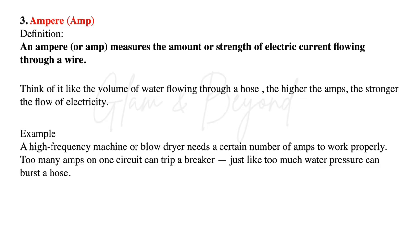Number three, ampere, also known as an amp. An ampere measures the amount of strength of electric current flowing through a wire. Think of it like the volume of water flowing through a hose — the higher the amps, the stronger the flow of electricity. For example, a high frequency machine or blow dryer needs a certain number of amps to work properly. Too many amps on one circuit can trip a breaker, just like too much water pressure can burst a water hose.